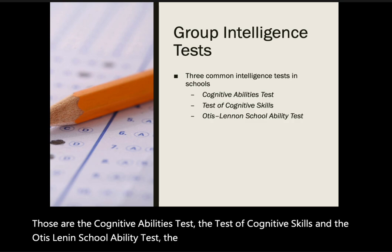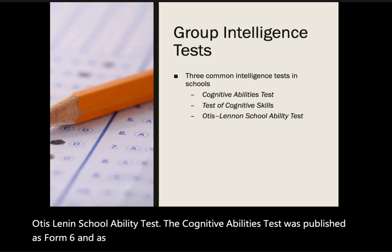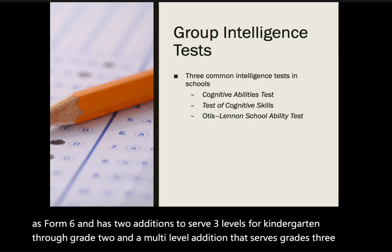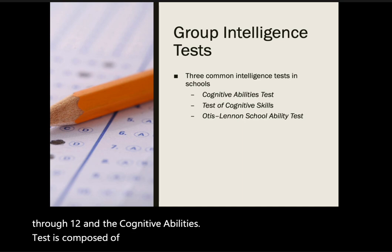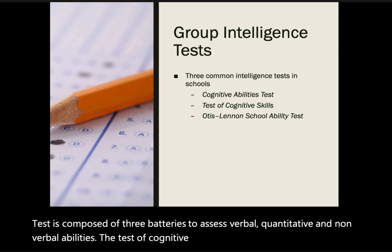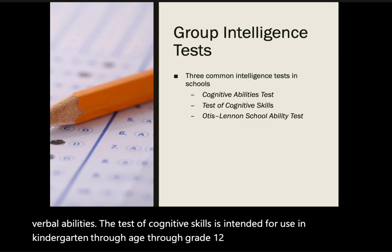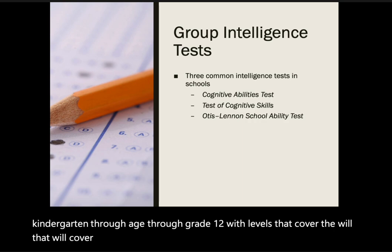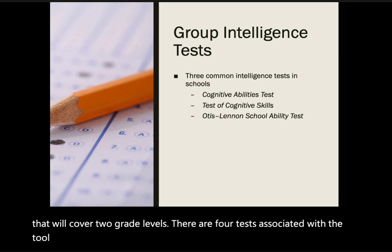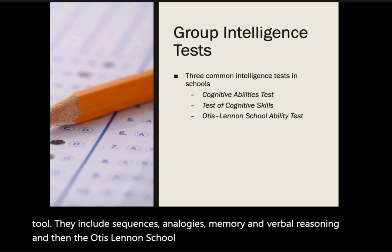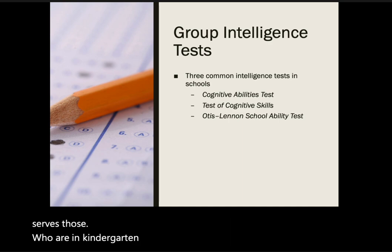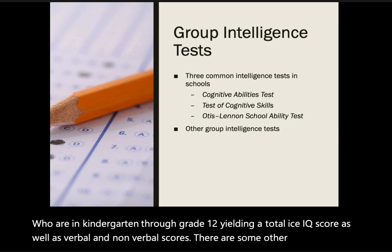The Cognitive Abilities Test was published as Form 6 with two editions: one serving kindergarten through grade 2, and a multilevel edition serving grades 3 through 12. It is composed of three batteries assessing verbal, quantitative, and nonverbal abilities. The Test of Cognitive Skills is intended for kindergarten through grade 12, with four tests including sequences, analogies, memory, and verbal reasoning. The Otis-Lennon School Ability Test is in its eighth edition and serves kindergarten through grade 12, yielding a total IQ score as well as verbal and nonverbal scores.